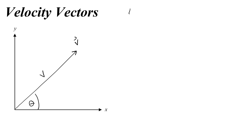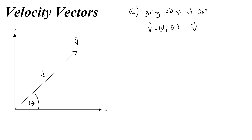So for example, maybe you were in a car going 50 meters per second at, maybe you know the angle, you're going 30 degrees relative to something. Well then you would write v equals v comma theta, or 50 meters a second comma 30 degrees.